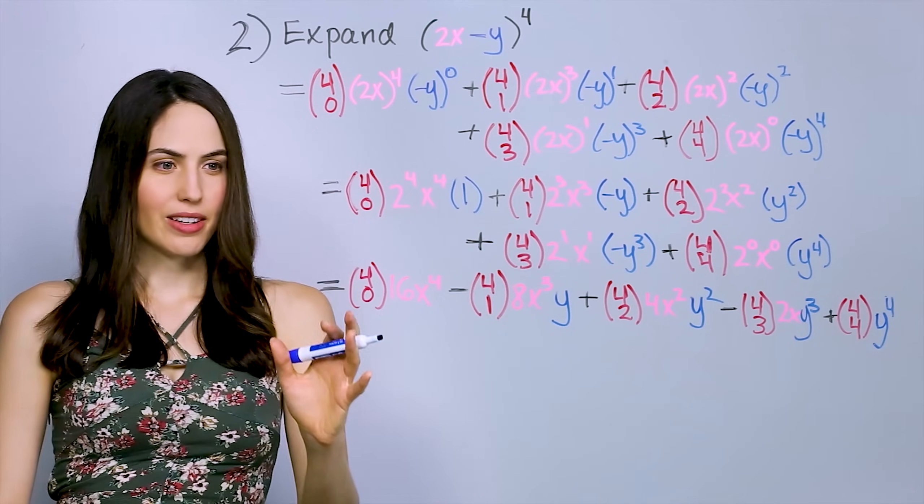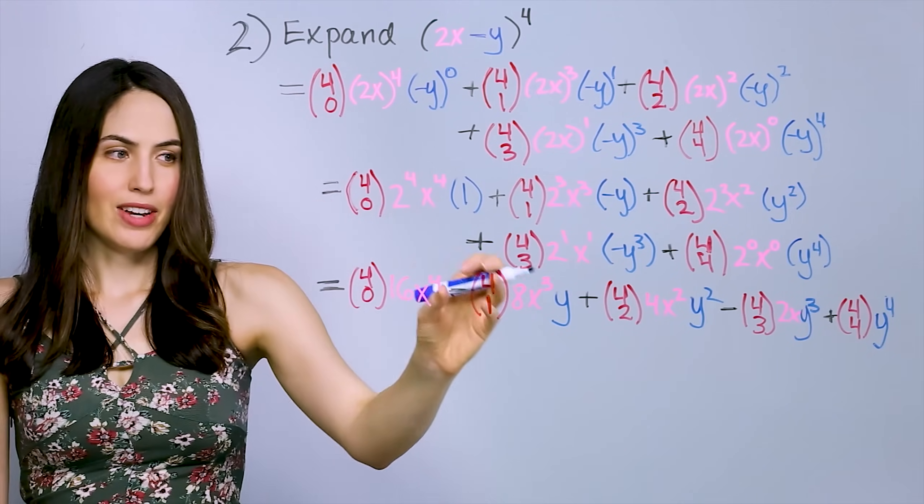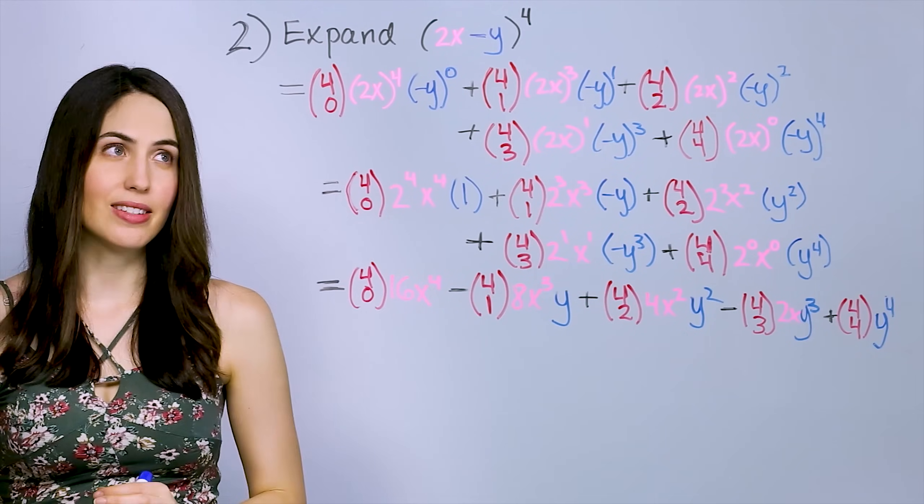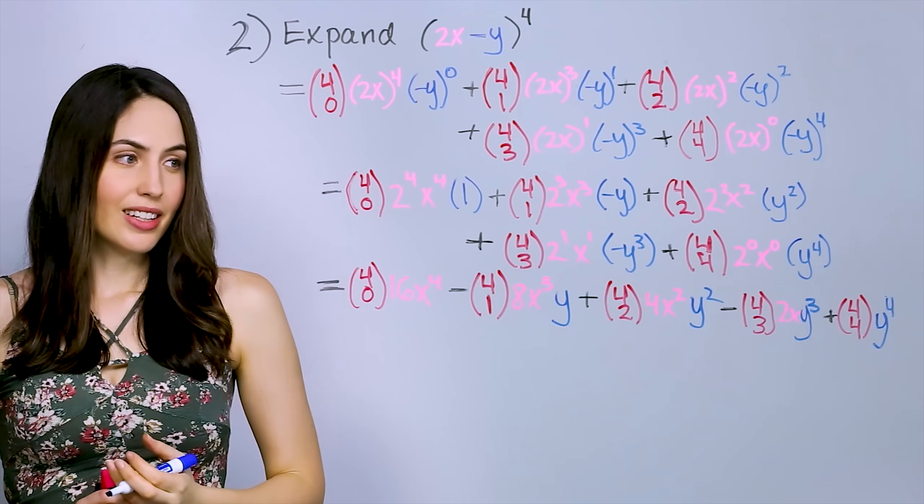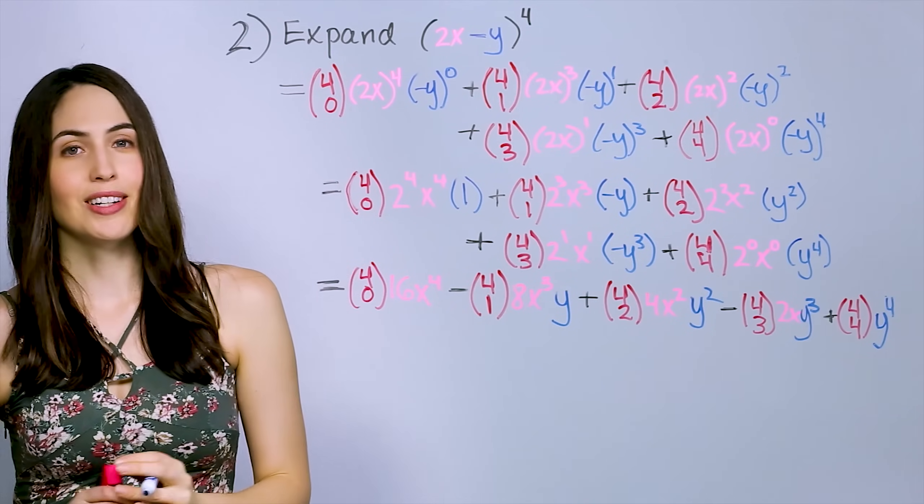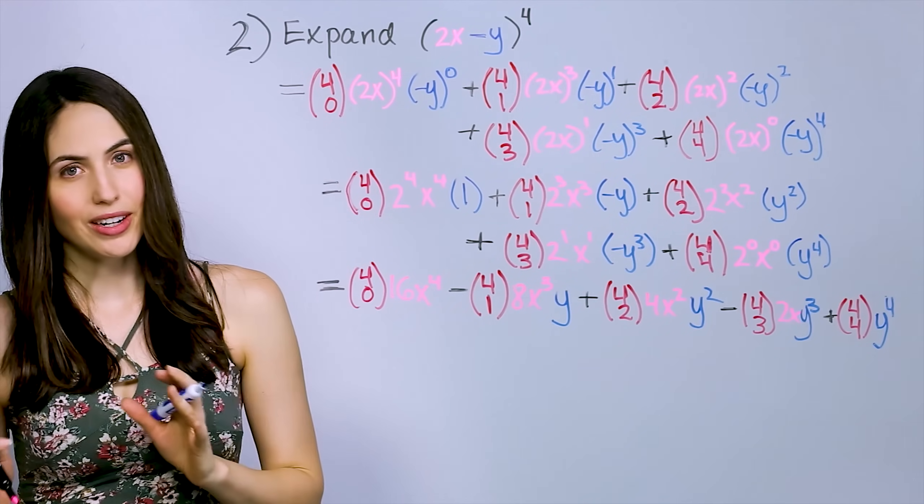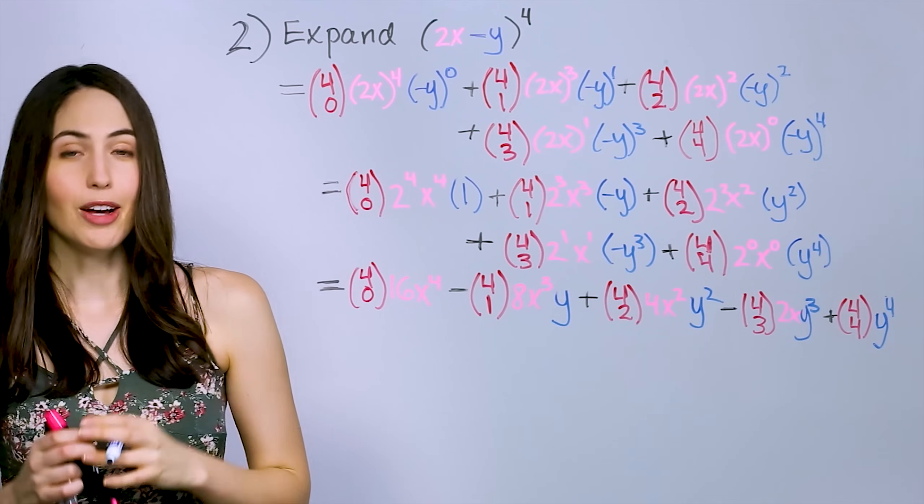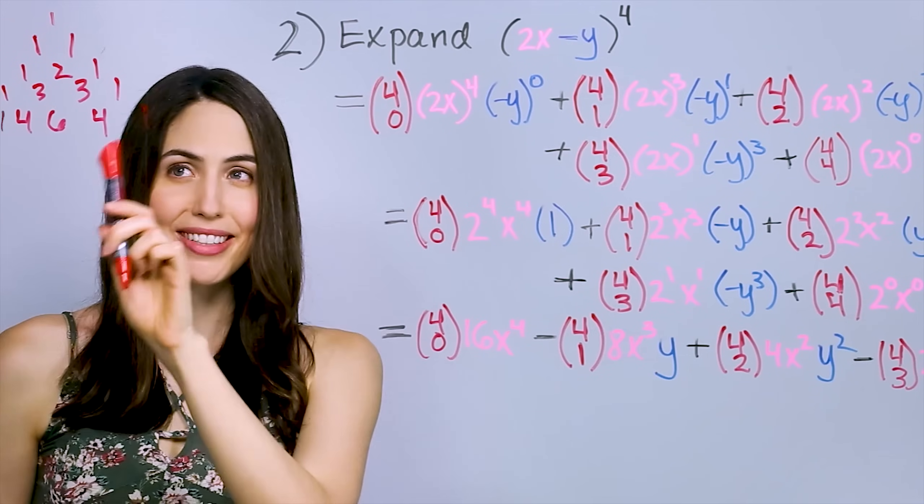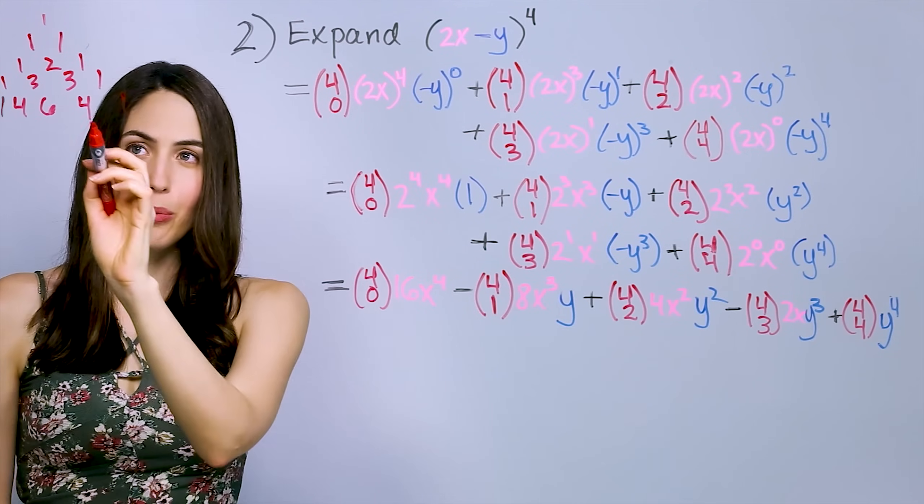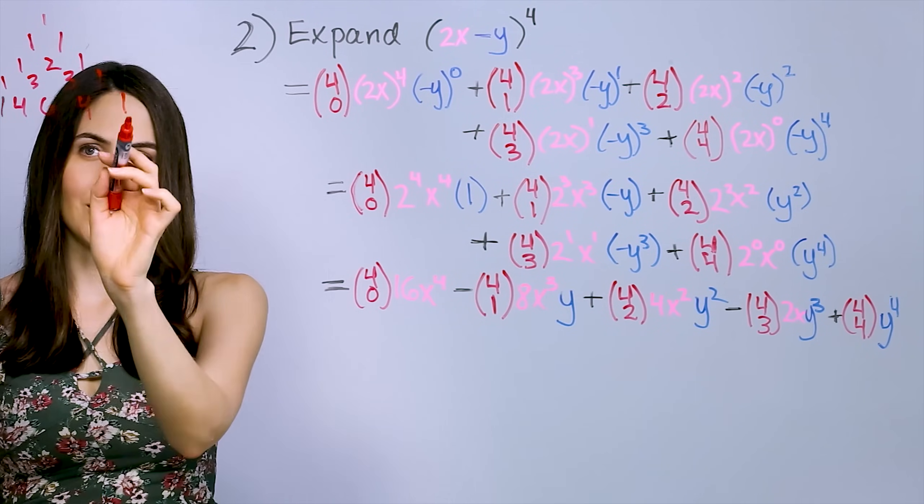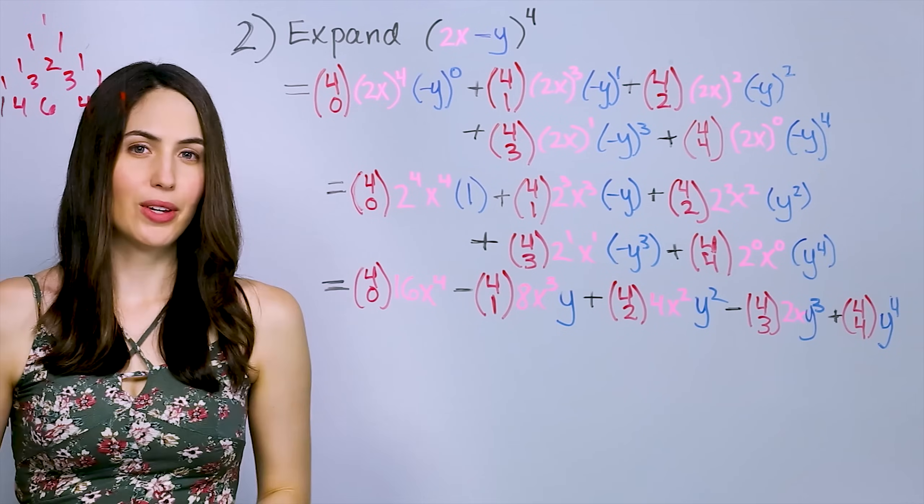So notice how the sign keeps switching positive, negative, positive, negative, positive, switches like that. So that's what happens in this difference kind of expansion. Now we just need to find out what these pesky coefficients are. So you can use the factorial formula, the combination formula, a button on your calculator, or Pascal's triangle. Mini Pascal's triangle. But you just want to grab whatever row has your power number in it. It's the second number. This one. 1, 4, 6, 4, 1. Those are our coefficients.